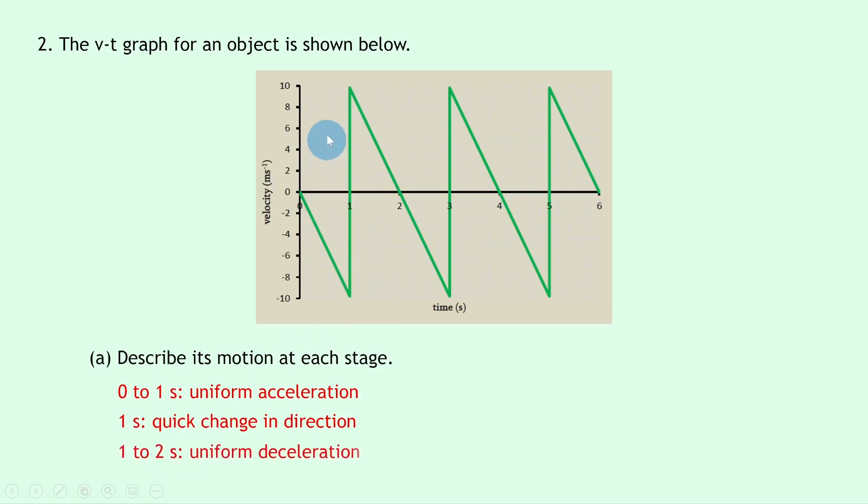And then between one to two seconds we have a uniform deceleration where the object is coming to rest again at the end of the two seconds. So we can say that at two seconds the object comes to rest. And then from two to three seconds and onwards we can say that the motion repeats. So that whole zigzag pattern up to the two seconds will just repeat up to the four seconds and then up to the six seconds and so on.